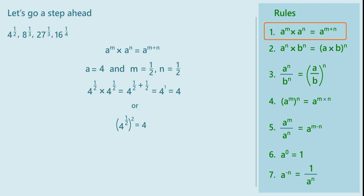This means that 4 raised to half is a number whose square is 4, which is nothing but 2 squared. So we can say that 4 raised to half squared is equal to 2 squared, hence 4 raised to half is 2.